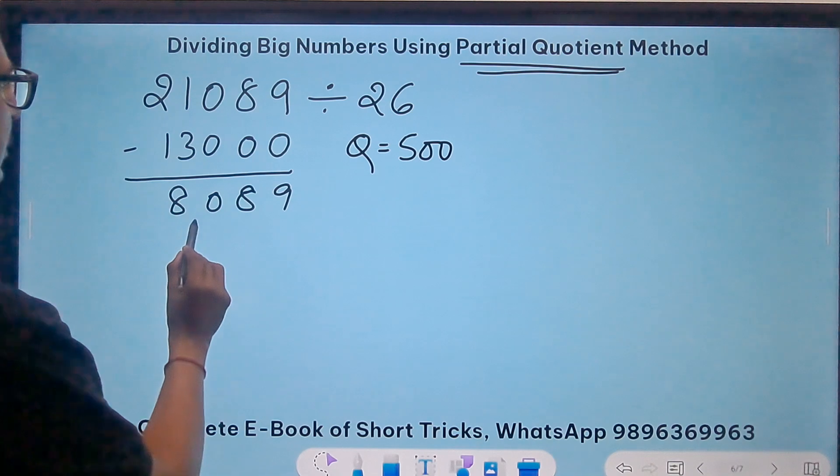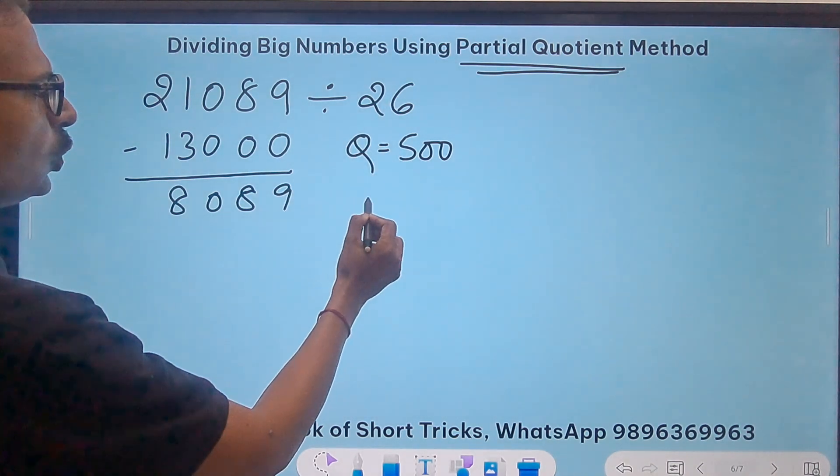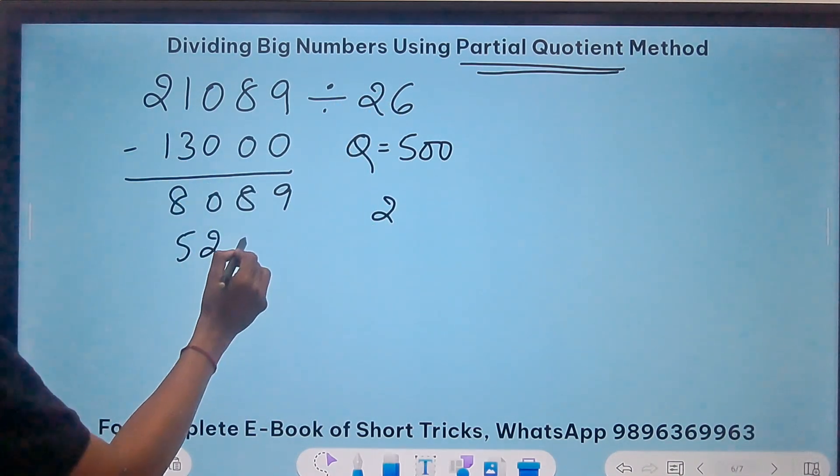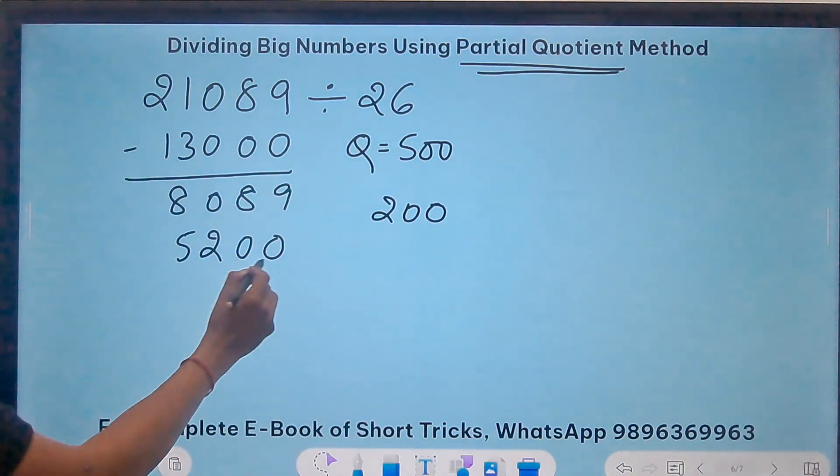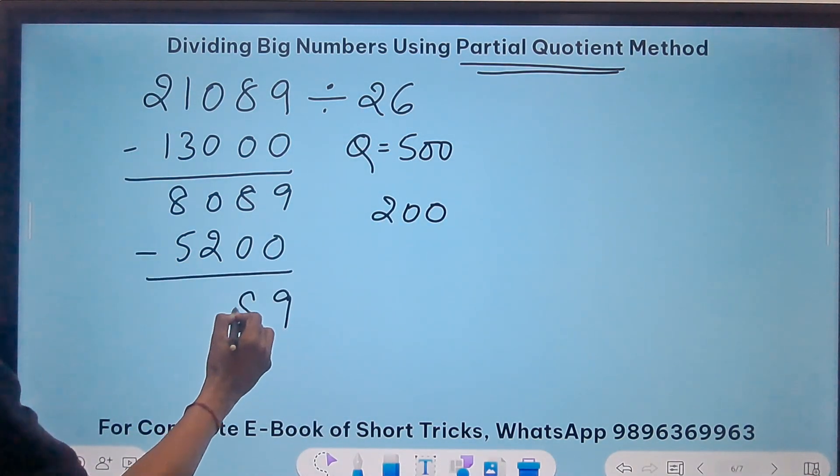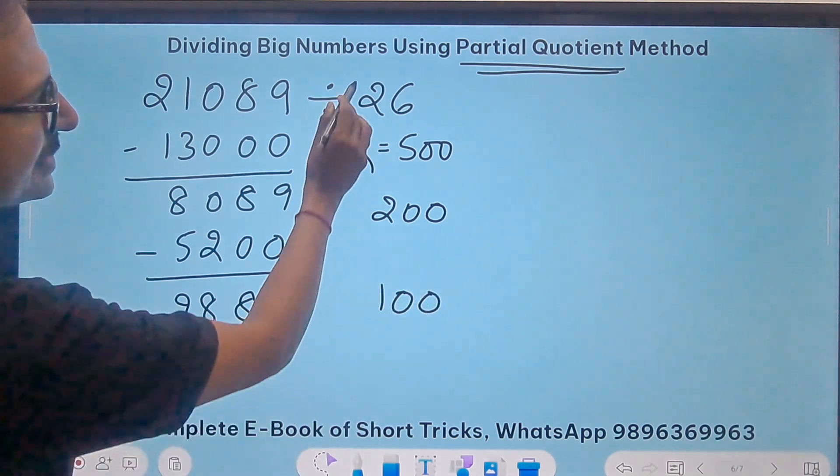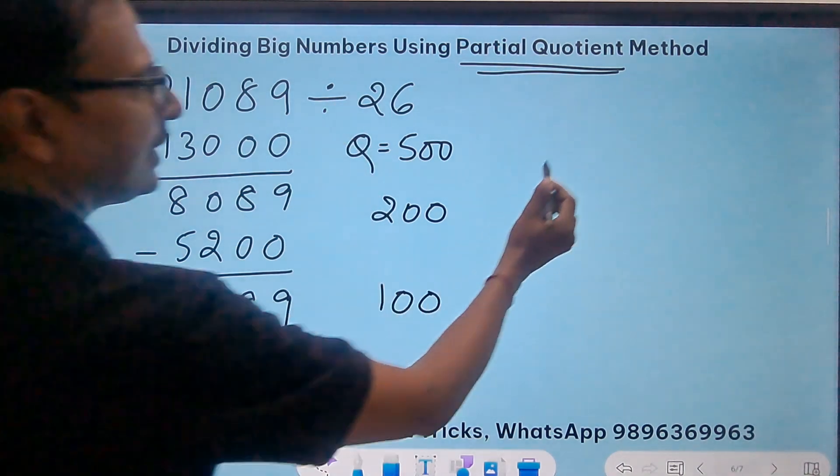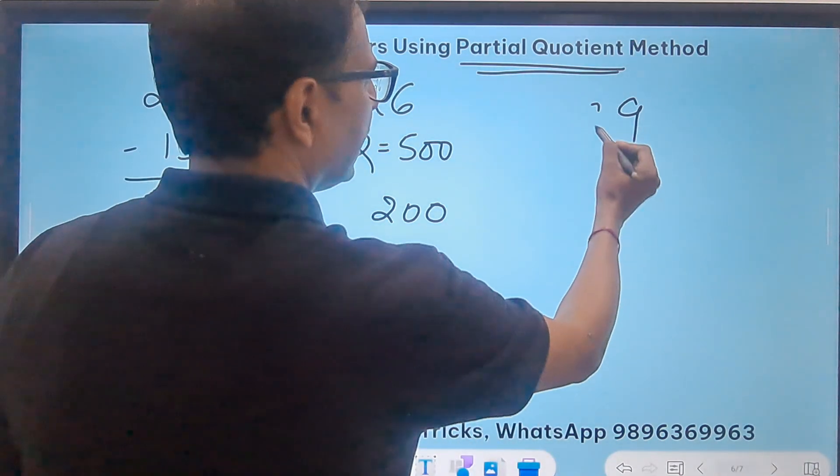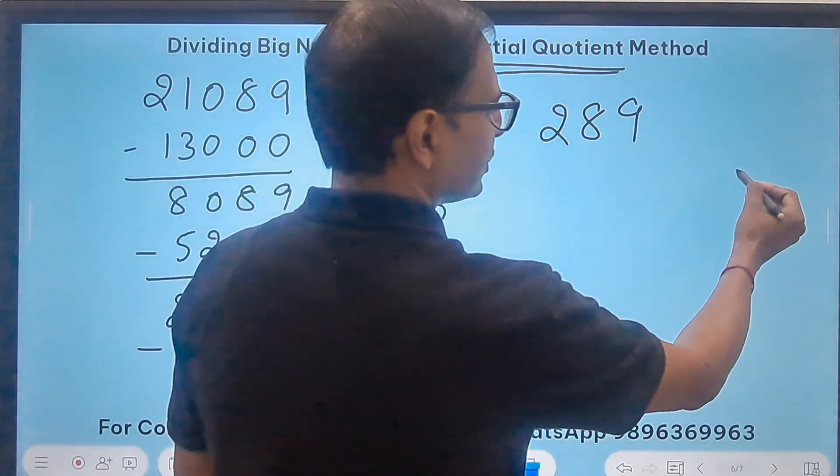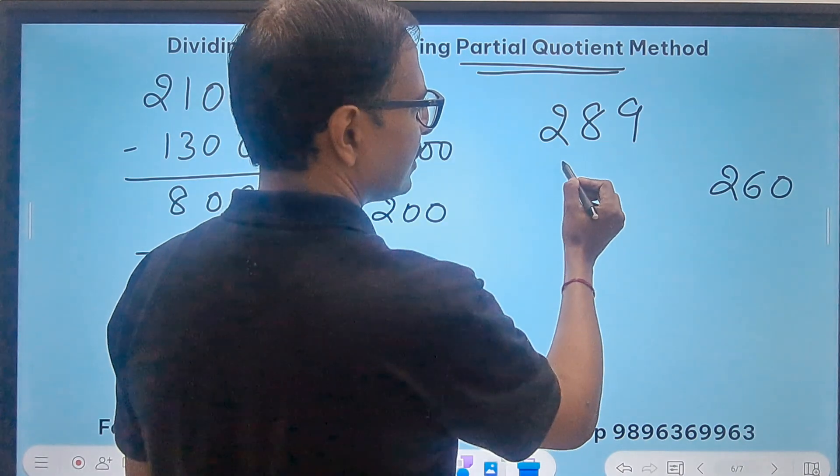Now 26 into 2 is 52, and two zeros makes it 200, so 26 into 200 is 5200. Subtract again and we get 2889. Now 26 into 100 is 2600. If I subtract I will get 289.